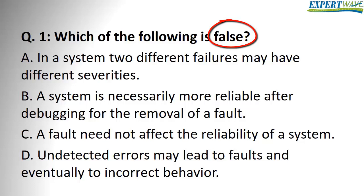Option A: in a system, two different failures may have different severities. This is true, as every failure can have a different severity. A system crash might have a high severity and a typo might have a low severity, and both are considered failures that the user will see.